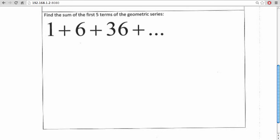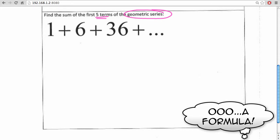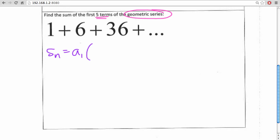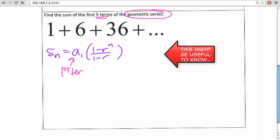We're asked to find the sum of the first five terms of the following geometric series. Now the formula to calculate the sum of a geometric series is S sub n equals A sub 1 times quantity 1 minus r to the n over 1 minus r. A sub 1 represents your first term in the series, r is your common ratio, and n is the total number of terms in the series.